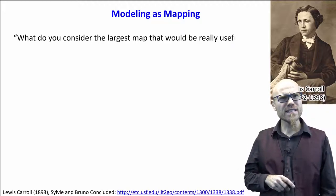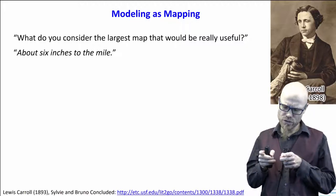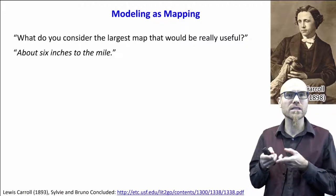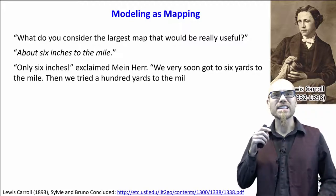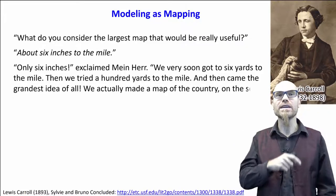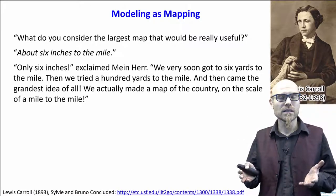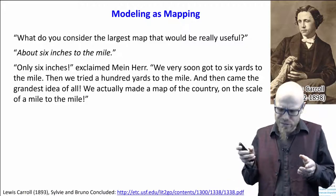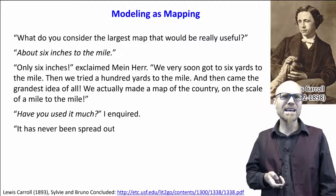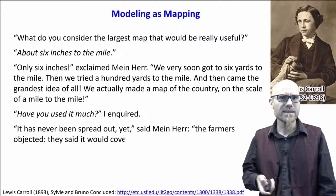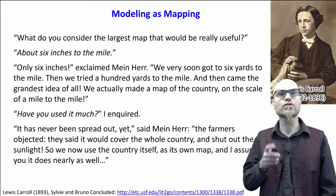The conversation goes: 'What do you consider the largest map that would be really useful?' 'About six inches to the mile.' So you represent a mile in reality with six inches — that's the most useful representation. 'Only six inches?' exclaimed Mein Herr. 'We very soon got to six yards to the mile. Then we tried a hundred yards to the mile. And then we came up with the grandest idea of all — we actually made a map of the country on the scale of a mile to a mile.' Because then you don't lose any detail. 'It has never been spread out yet,' said Mein Herr. 'The farmers objected — they said it would cover the whole country and shut out the sunlight.'